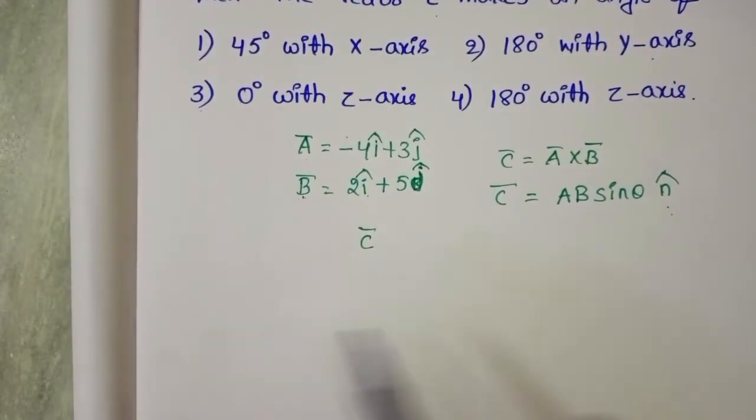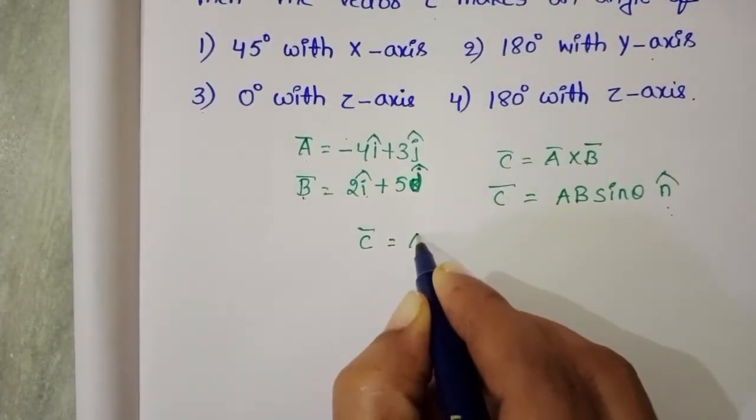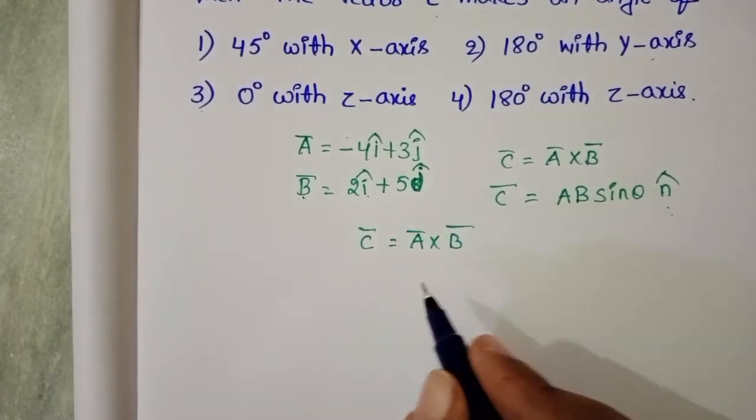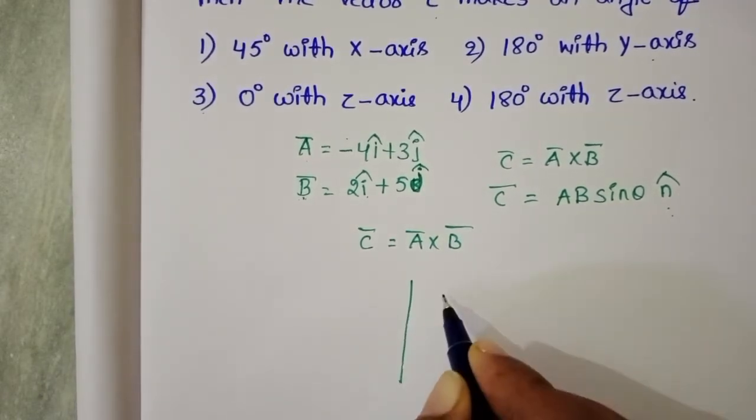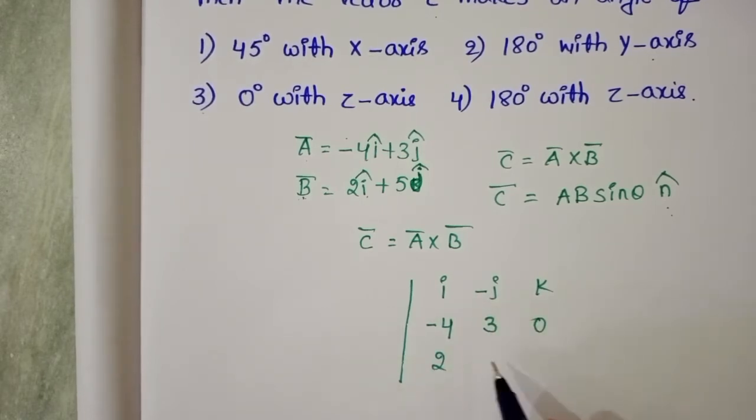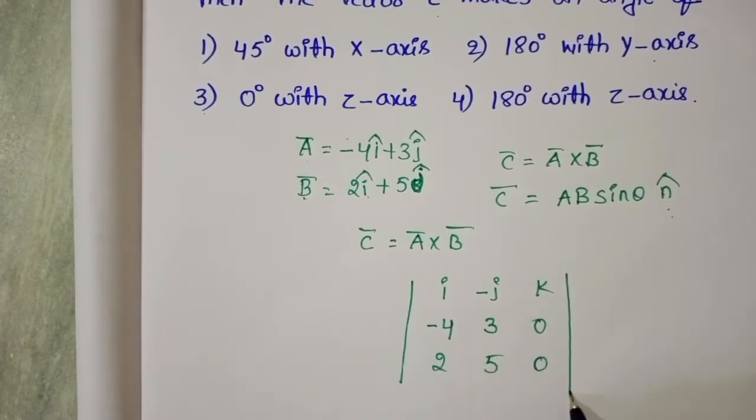Let us find out. C̅ equals A̅ × B̅. Find C̅ by using the determinant: î, ĵ, k̂; first vector -4, 3, 0; next B̅: 2, 5, 0.